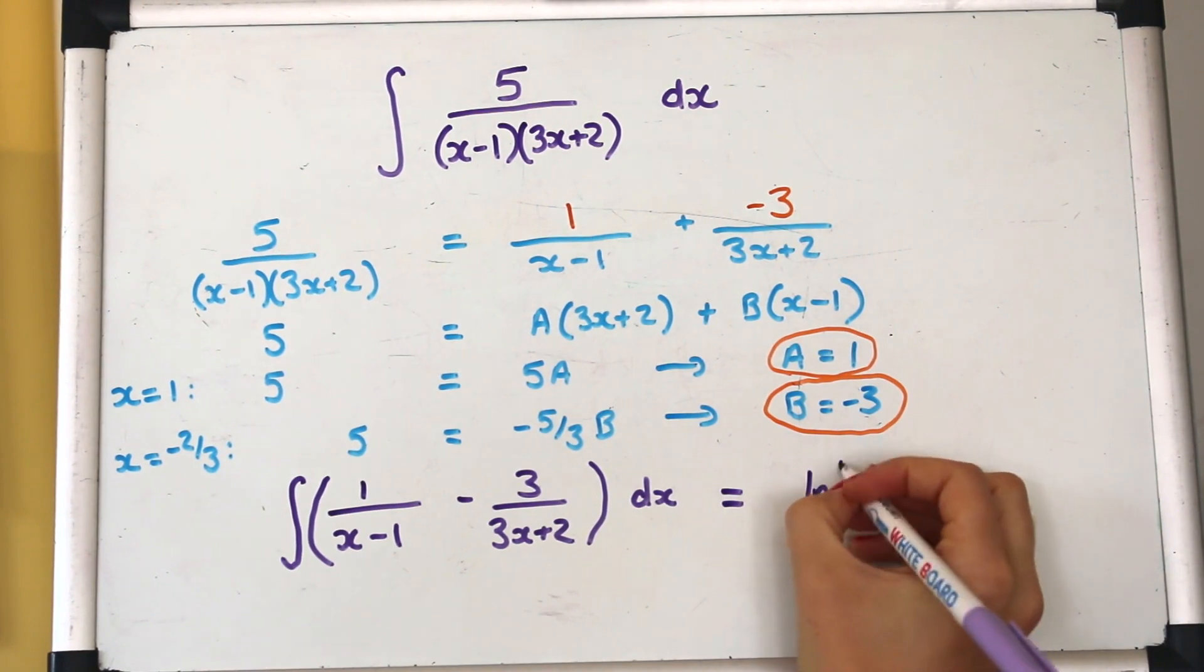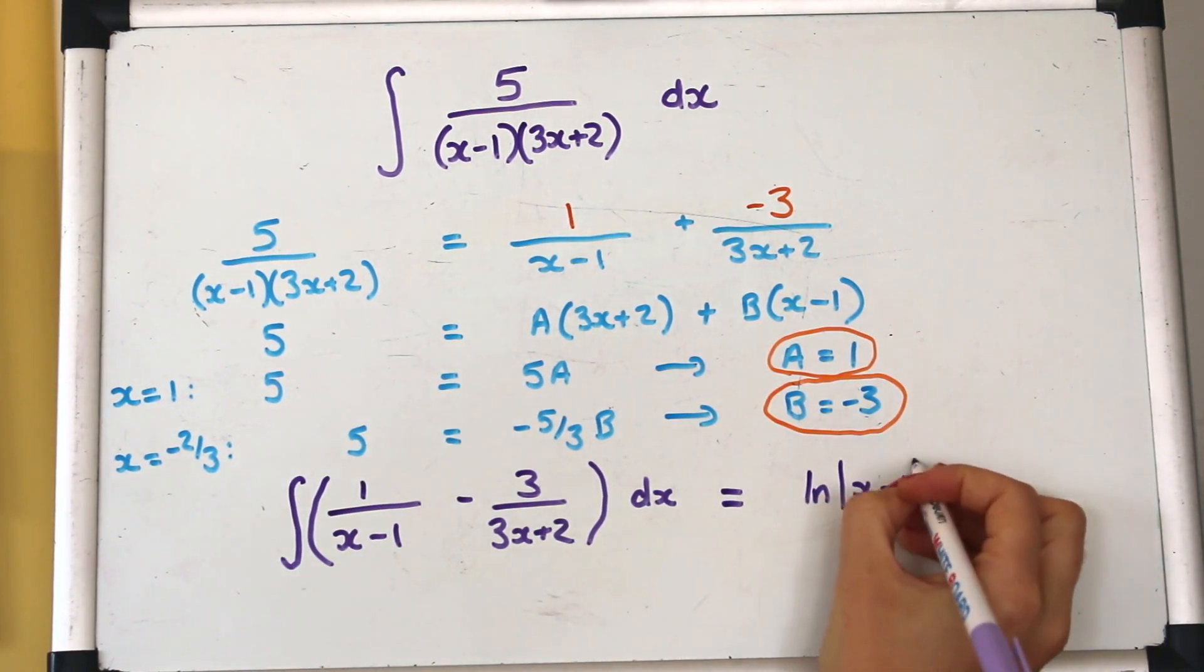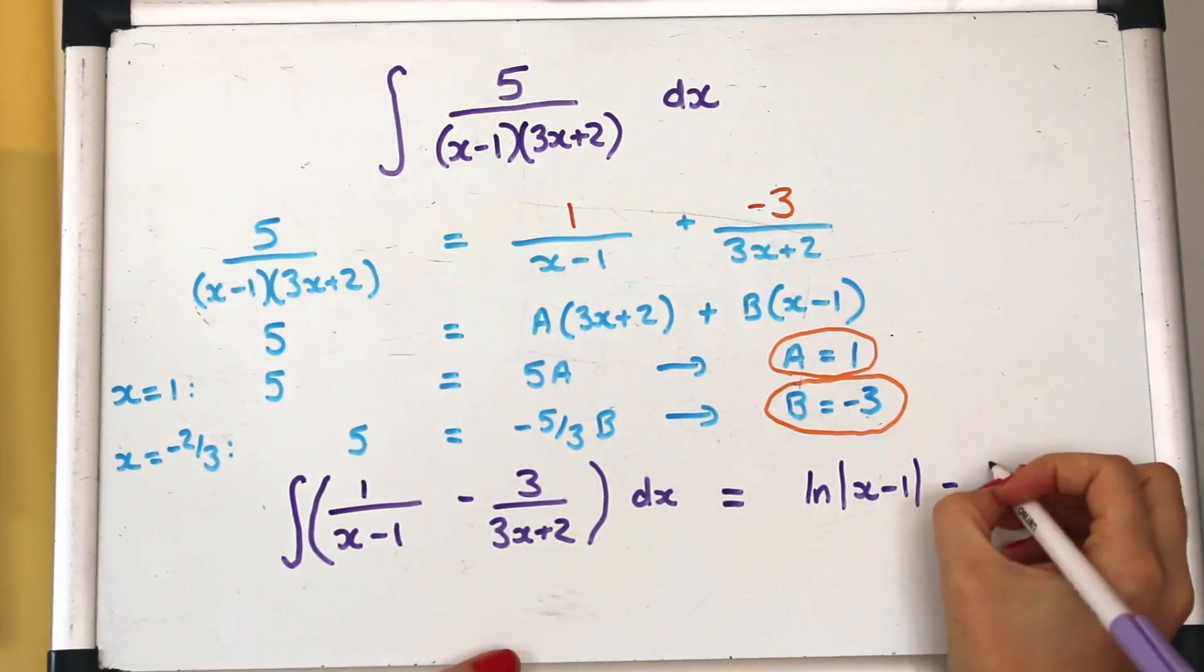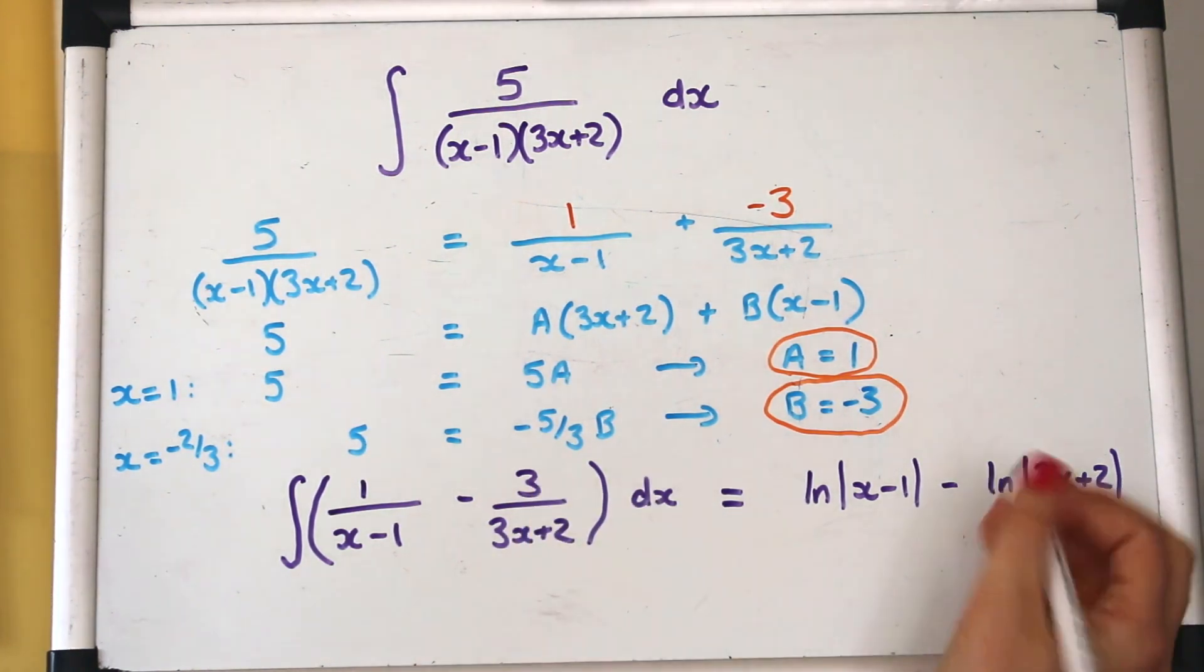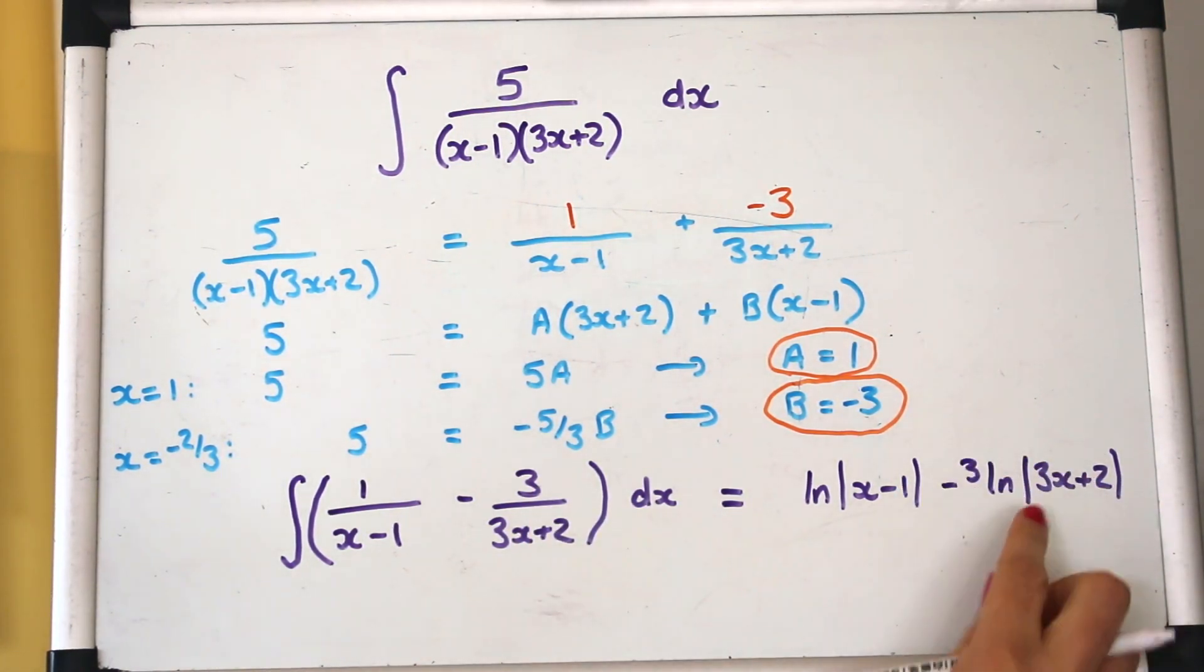So that first one would be log of |x minus 1| and log of |3x plus 2| with the minus sign still there. The 3 on the top of that fraction can stay at the front there.